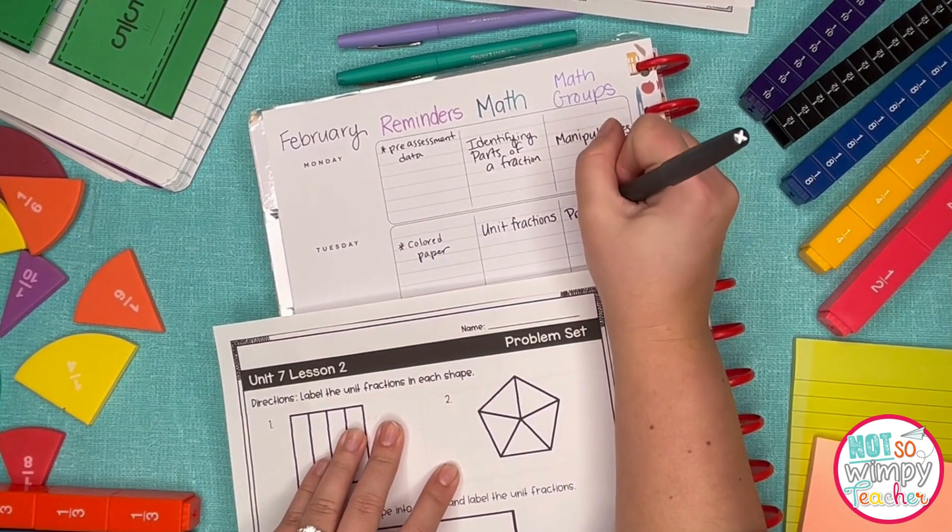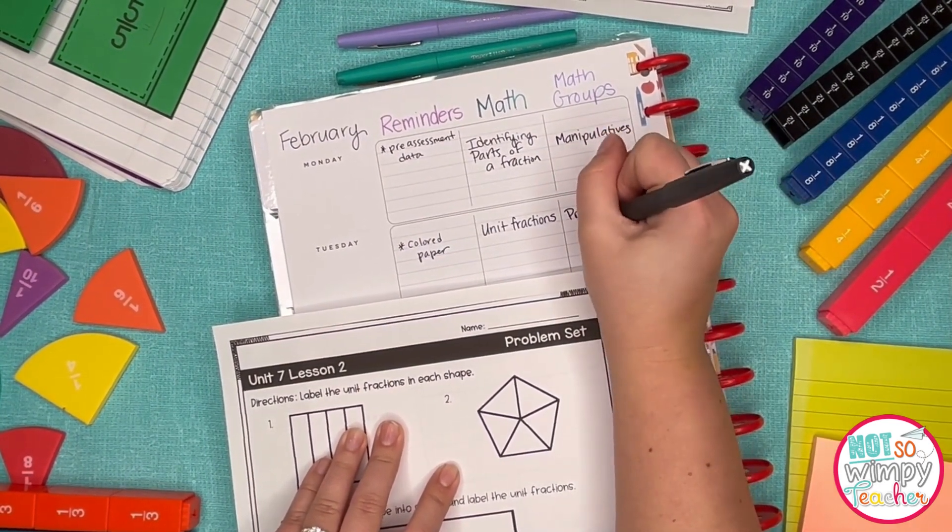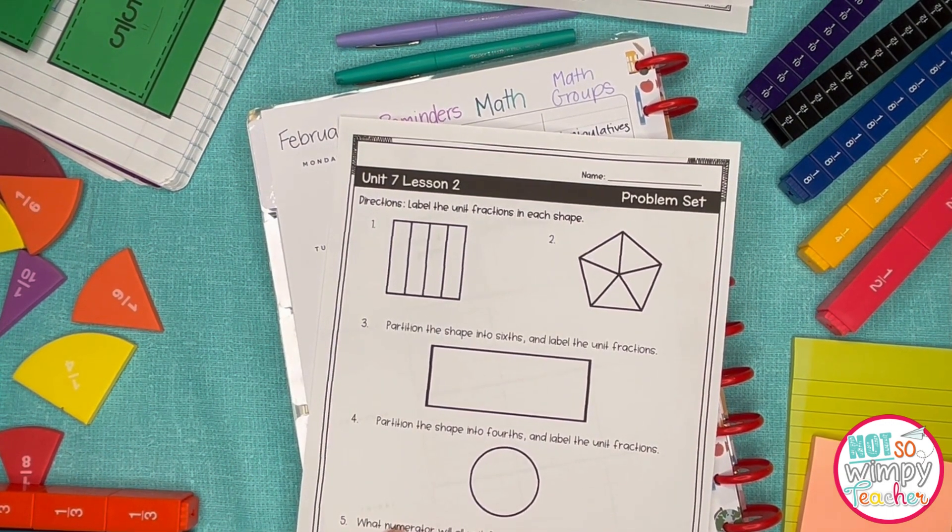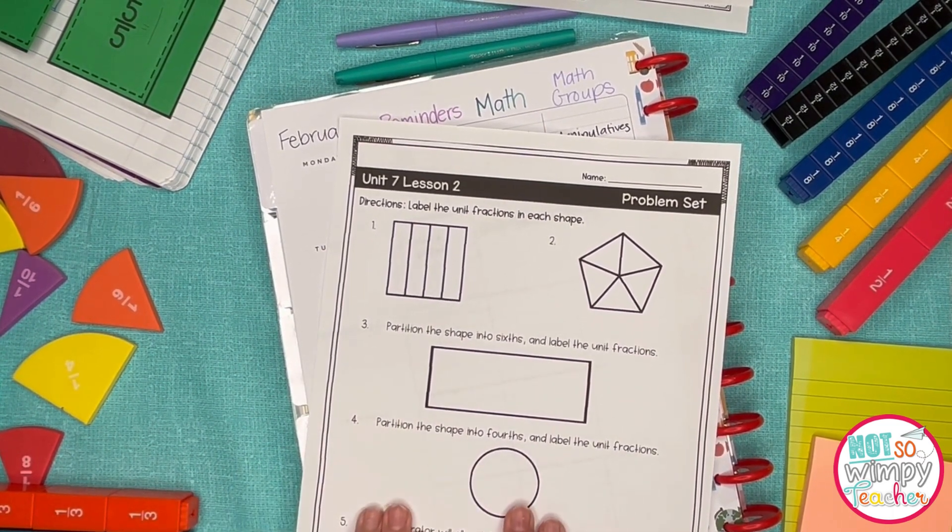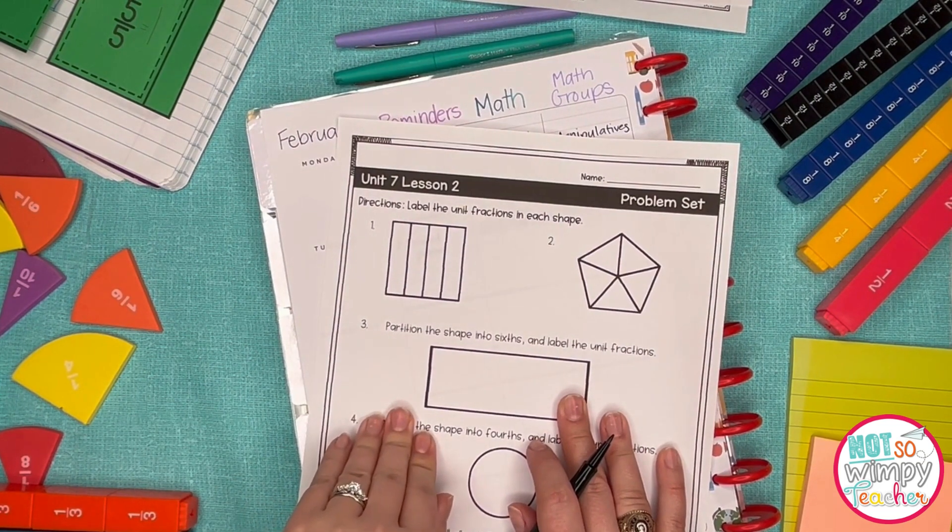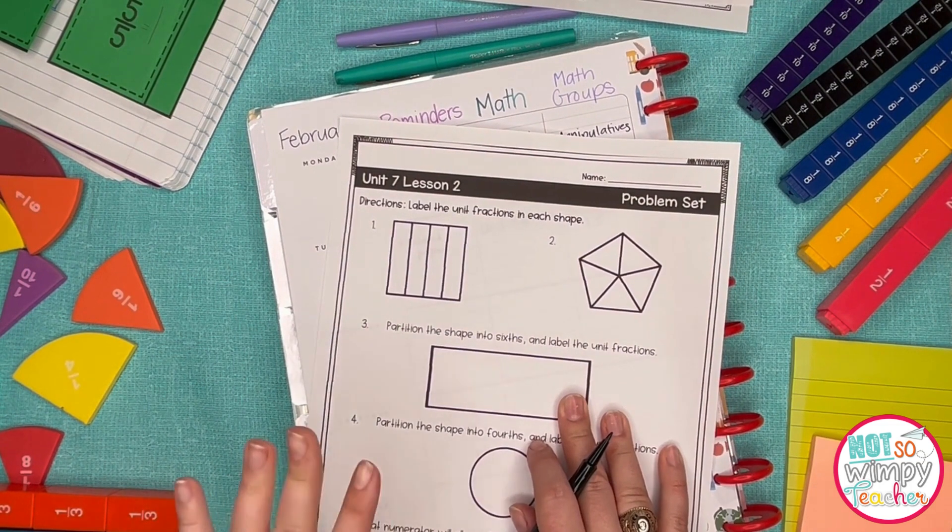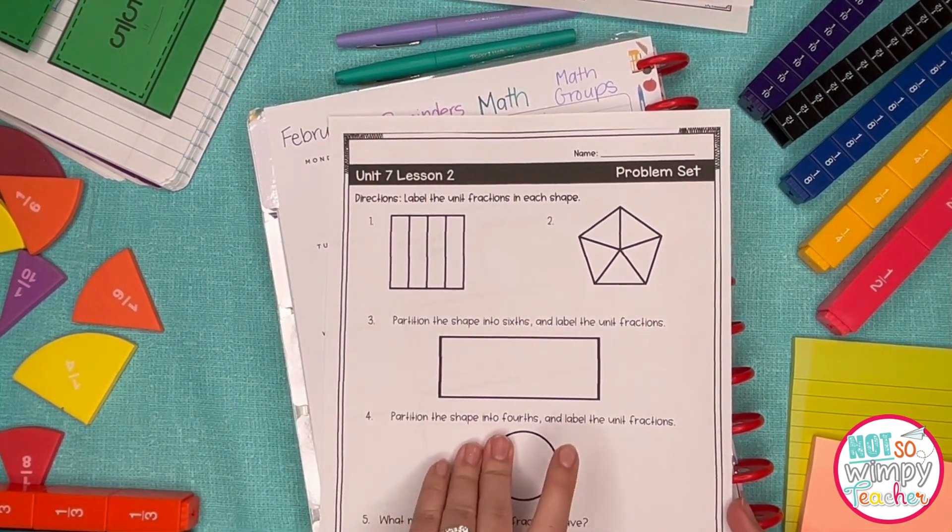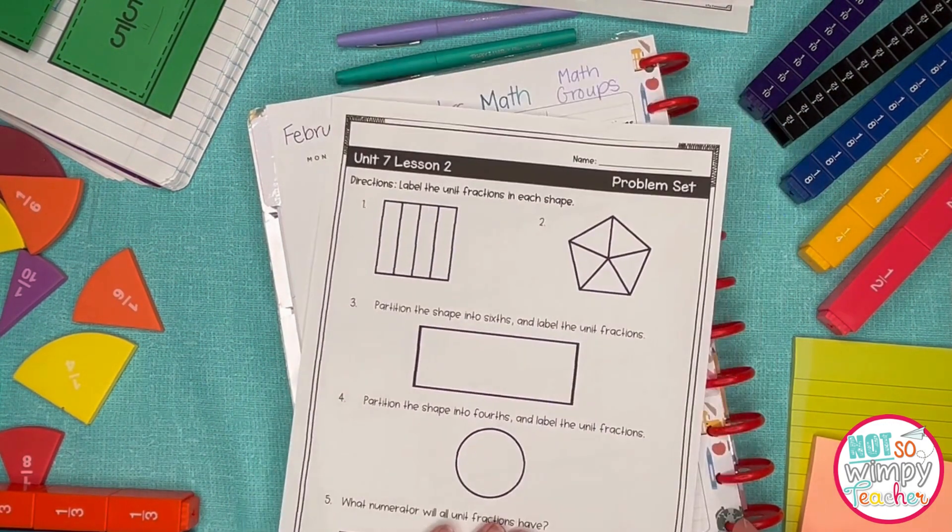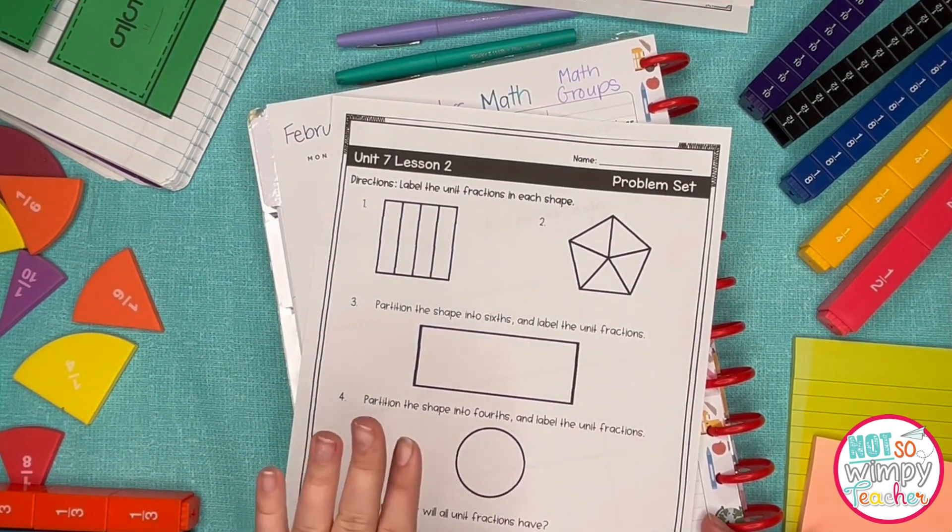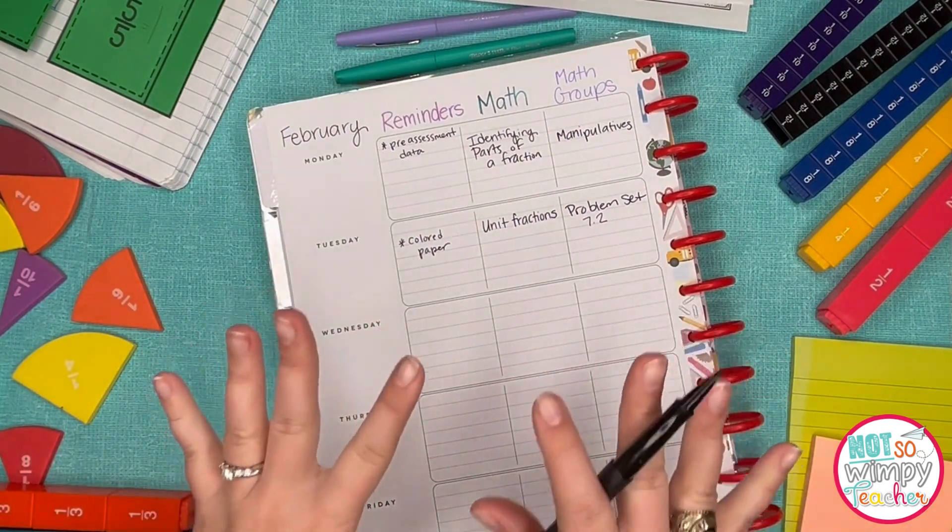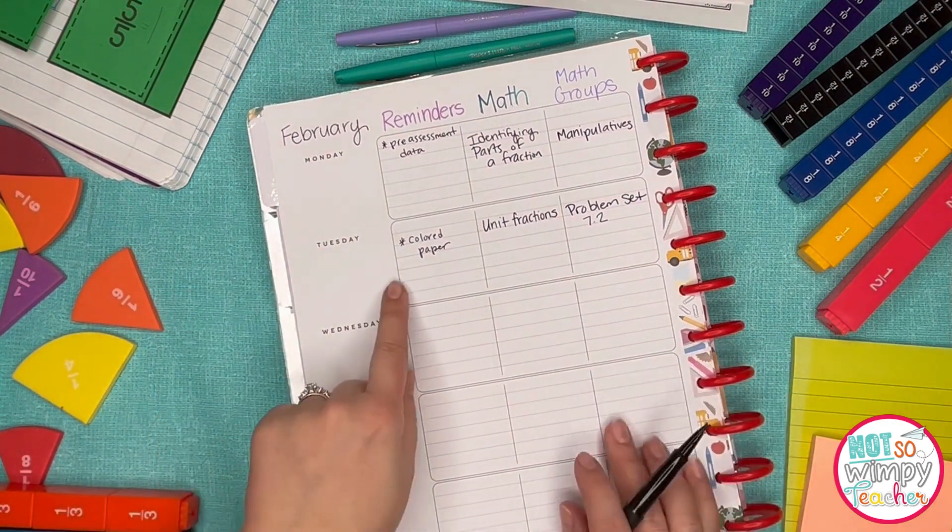Something I like to do, if I'm not doing an exit ticket, I will give a problem set as an exit ticket. It's a few more questions, might take them a little longer to complete. I'll say this is your independent task. After maybe five minutes, I'll say if you need extra support, my table is open. I'll print problem sets for everyone and a few extra homeworks. And if you came to my table for help on the problem set, I'm going to staple the homework to it and send you home and say, teach your adult how to do this.